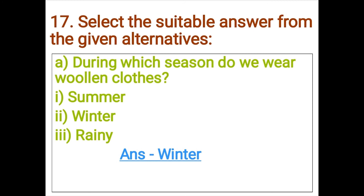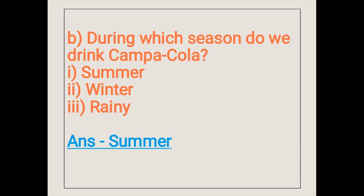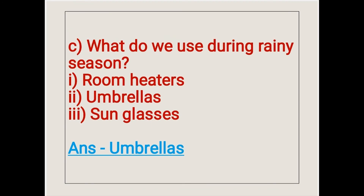Next is select the suitable answer from the given alternatives. C: What do we use during rainy season? Options are: 1. Room heaters, 2. Umbrellas, 3. Sunglasses. Answer is umbrellas.